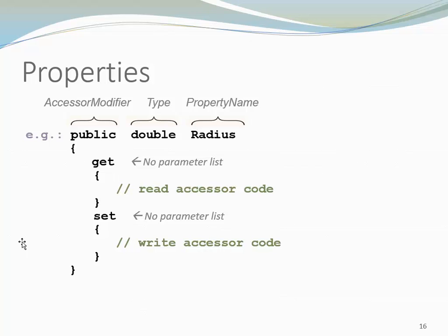So this is different from Java. We don't have two separate methods. It's one property that has get with a code block and set with a code block. But those code blocks correspond to the method body of the getter and the setter.